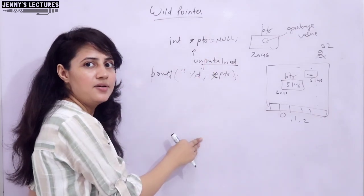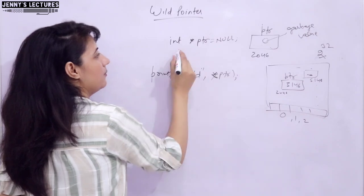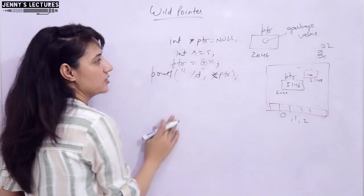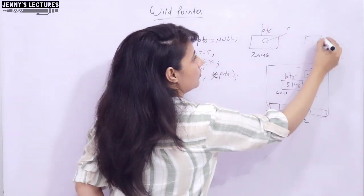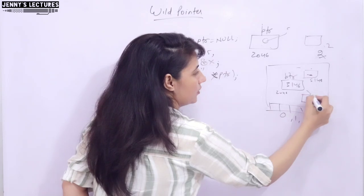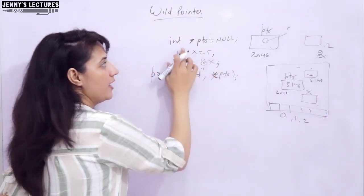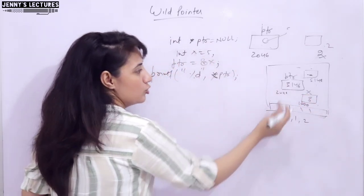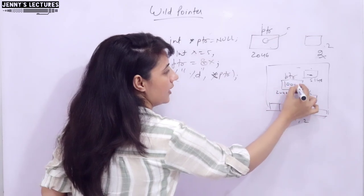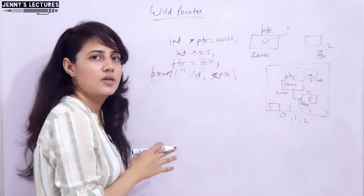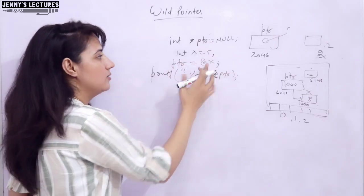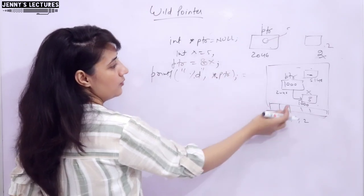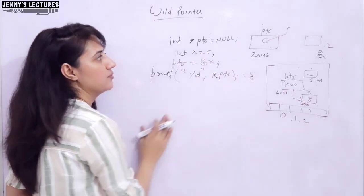Further in program, if you want to assign any address in this pointer, you can assign. Like here I am taking int x is equal to 5, and here I want to assign ptr is equal to address of x. So now we have reserved some space for this x, 4 bytes because it is of integer type, and suppose starting address is 1000. In x we have 5, so now this pointer is containing 1000 and it is now pointing to x. Now it is valid. Now it is no more a wild pointer. It is like a normal pointer which is containing address of x. And whenever you dereference this pointer, now it will give you value at 1000, that is 5.